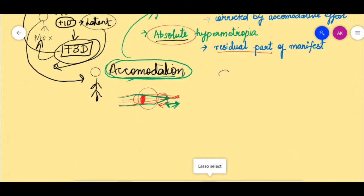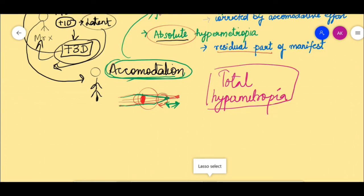Finally, total hypermetropia is easy to understand: it is simply latent hypermetropia plus manifest hypermetropia.